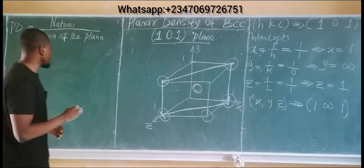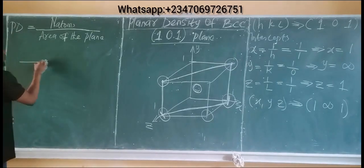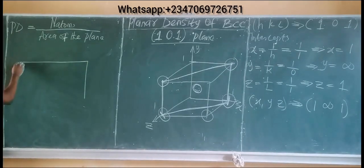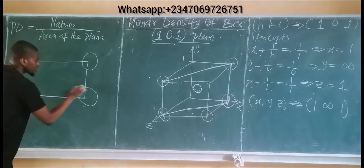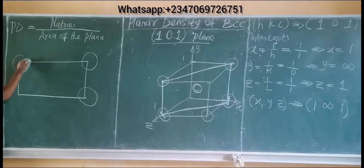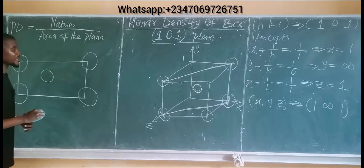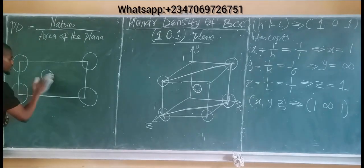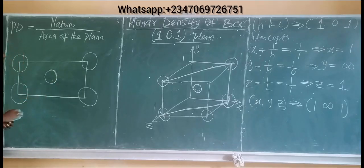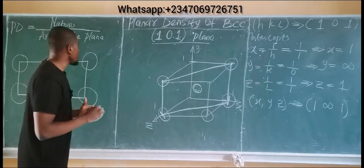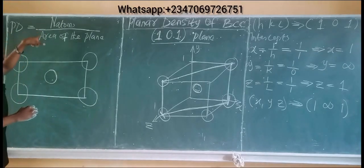The 101 plane is rectangular in shape. We have corner atoms at each corner and a large central atom at the body of the cube, which makes it a body-centered cubic structure. From the formula, we need the number of atoms divided by the area of the plane.